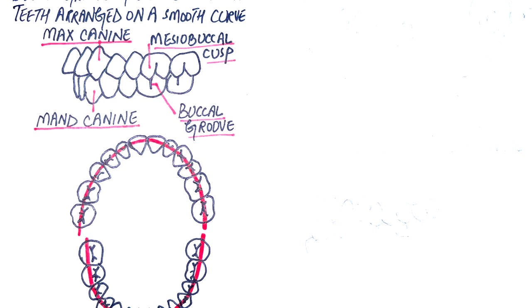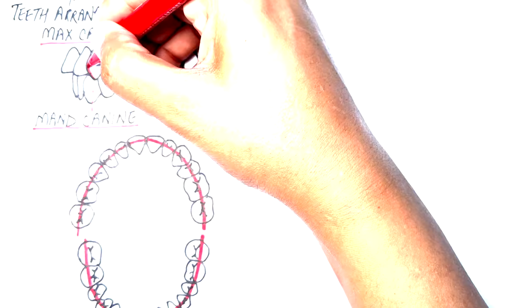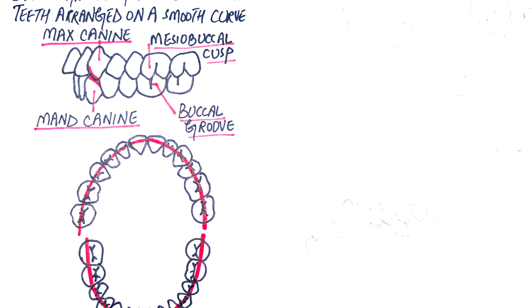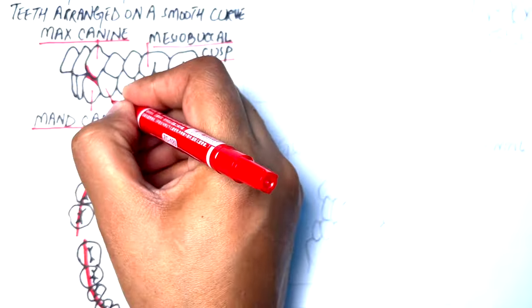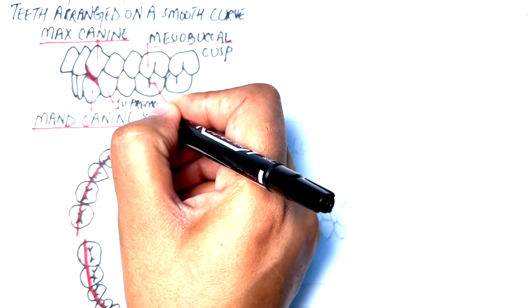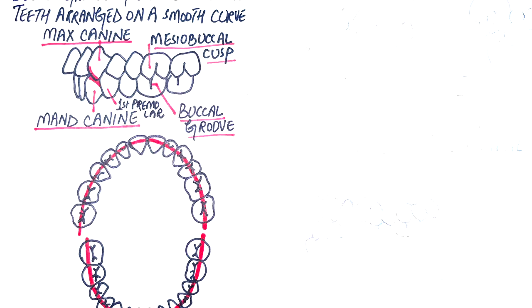In a normal Class 1 canine relationship, the upper canine's mesial incline lands on the distal incline of the lower canine. Similarly, the distal incline of the upper canine collides with the lower first premolar's mesial incline. To make life easier, let's just say that the maxillary canine cusp tip lies in the occlusal embrasure of the mandibular canine and first premolar.